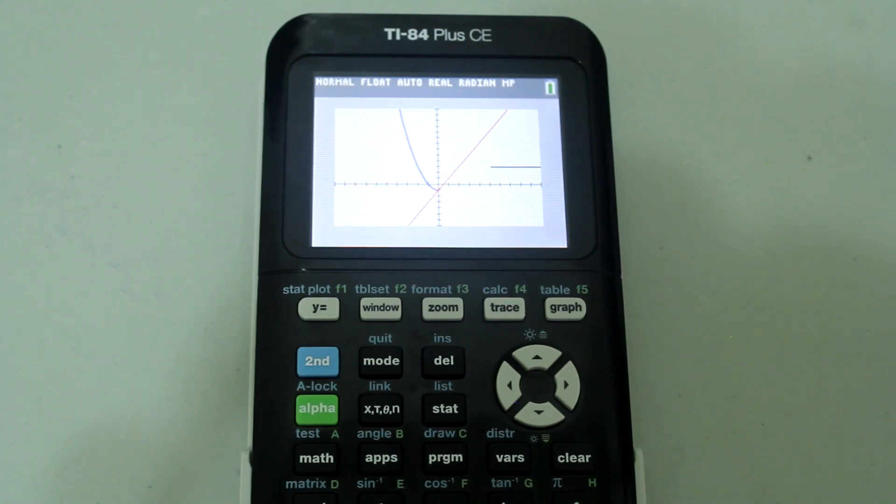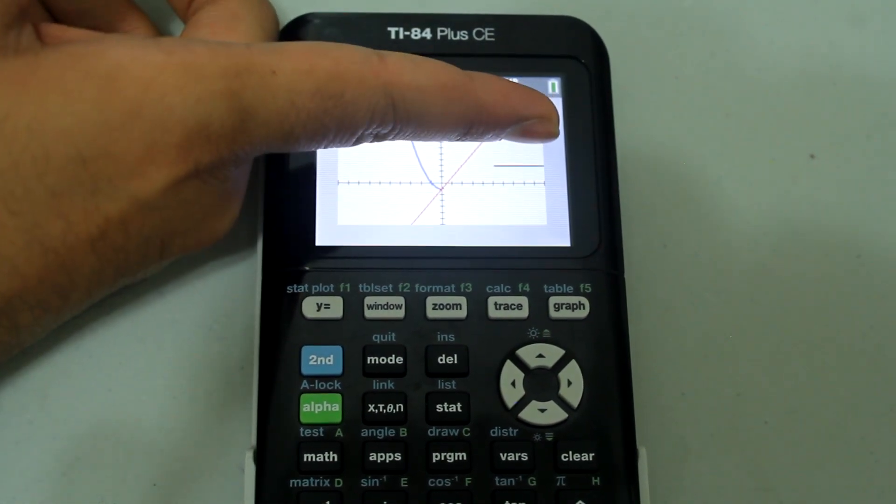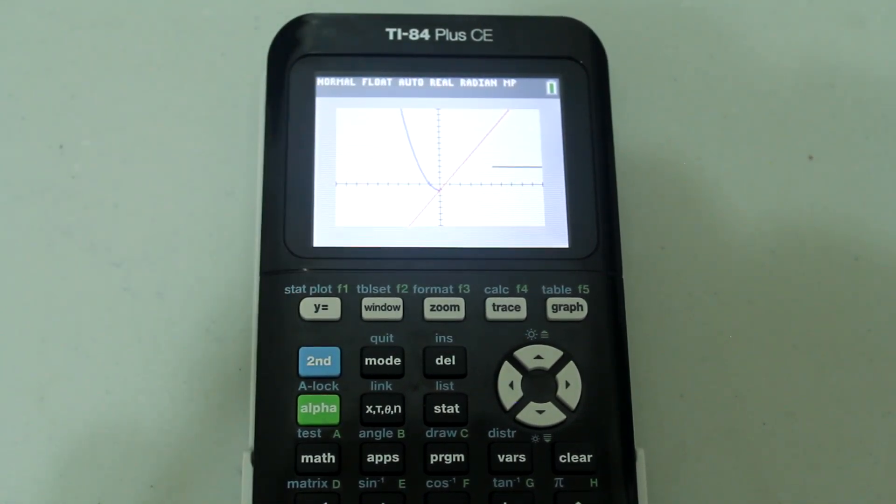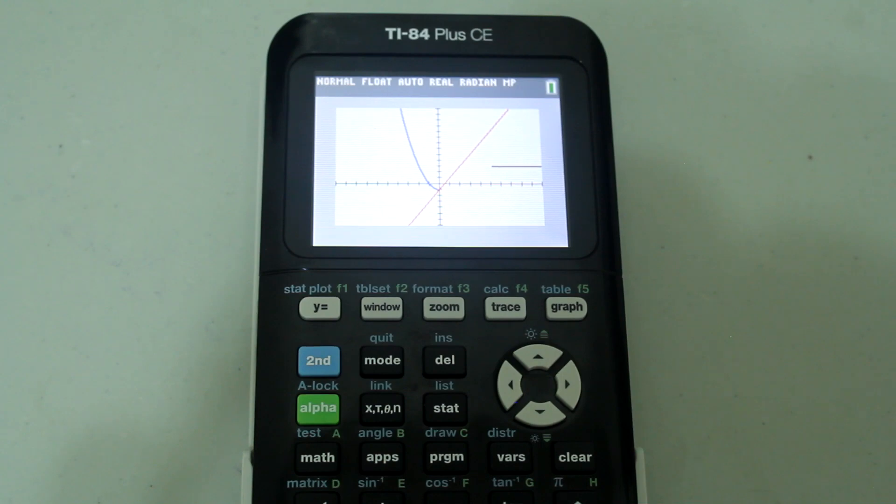This is what the graph eventually comes out to. And you can already see that there is a problem. This part is good. This part is good. But the middle part, that line, isn't just graphed within the interval that I specified. It graphed the entire line from negative infinity to infinity. So if I want to fix that...